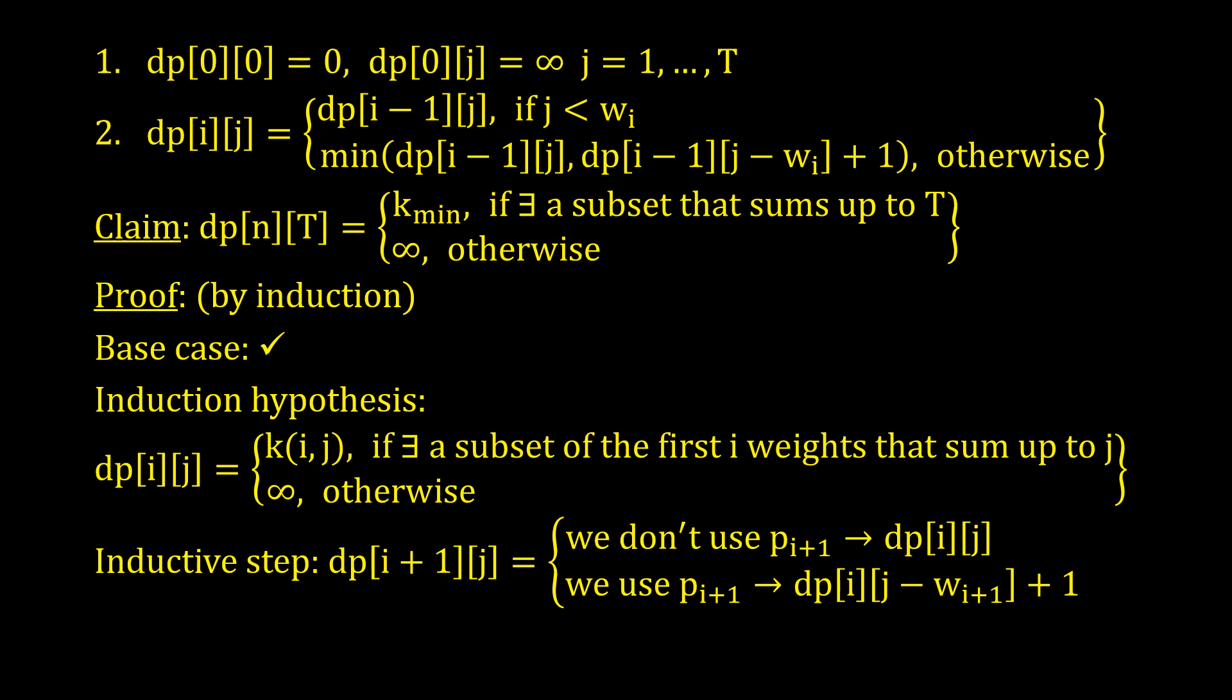Then, for the inductive step, if we don't use the i+1-st plate, then the problem is reduced to dp[i][j]. If we use it, the reduction goes to dp[i][j - w_{i+1}]. The minimum of these values determines the correct decision, exactly as it is in the recurrence relation.